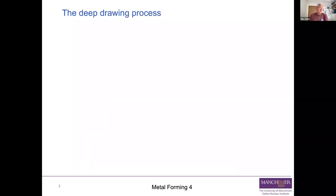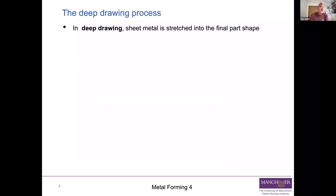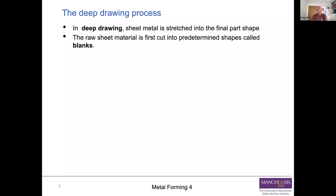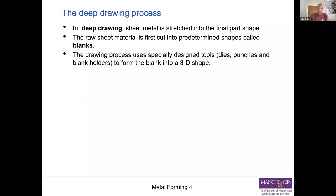Deep drawing itself as a process: you take a piece of sheet metal and stretch it into its final part shape. It's not like extrusion or forging, which tend to take a lump or a billet. It takes a piece of sheet metal and changes its shape into a thin-walled part. You start off by cutting your raw rolled sheet material into predetermined shapes called blanks. The drawing process uses specially designed tools — generally called dies, punches, and blank holders — to form the blank, which is flat, into a three-dimensional shape, like a beer can. That's a classic deep drawn metal component.